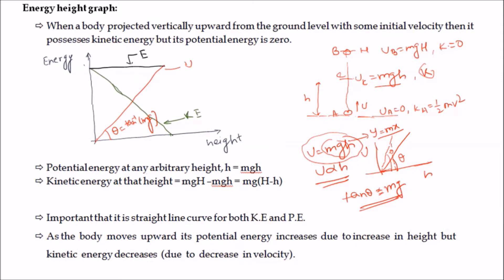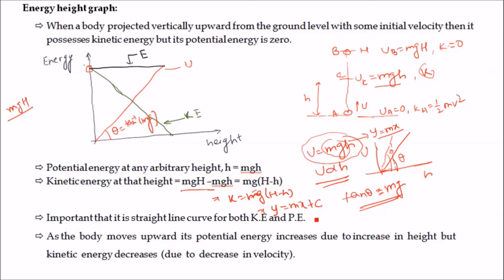To get the kinetic energy curve, we know the total energy equals mgH. The potential energy is mg(small h), so the kinetic energy at any height is mg(H − h). For small h = 0 (at the ground), kinetic energy equals mgH — this is the highest kinetic energy, at point A. This is again a straight line.